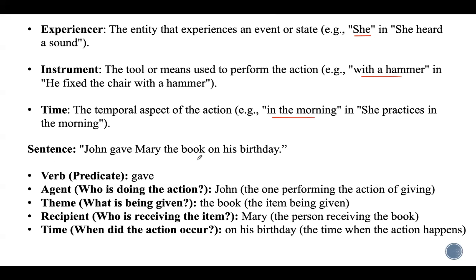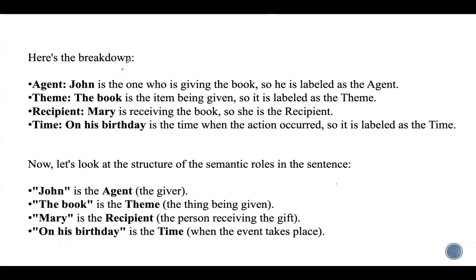Take the sentence: 'John gave Mary the book on his birthday.' Find out the roles. First, identify the verb or predicate — here the verb is 'gave.' Then find all remaining roles: Agent is who is performing the action — John. Theme is the item being given — the book. Recipient is who is receiving it — Mary. And 'on his birthday' is the Time during which the action was performed.